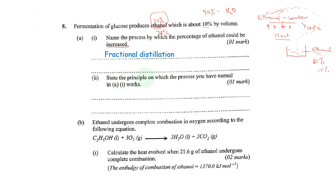State the principle on which the process we have named in part (i) works. So this principle works due to the difference in boiling points. The principle is different boiling points between our water and ethanol.